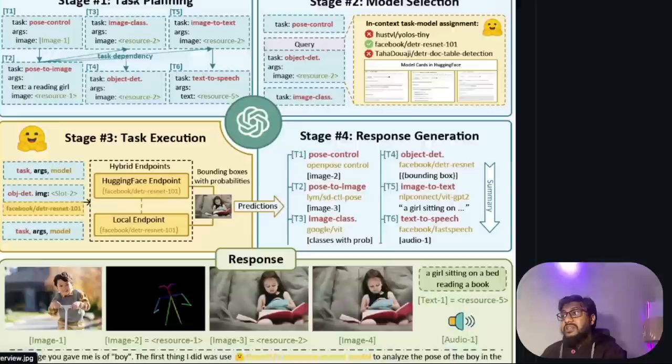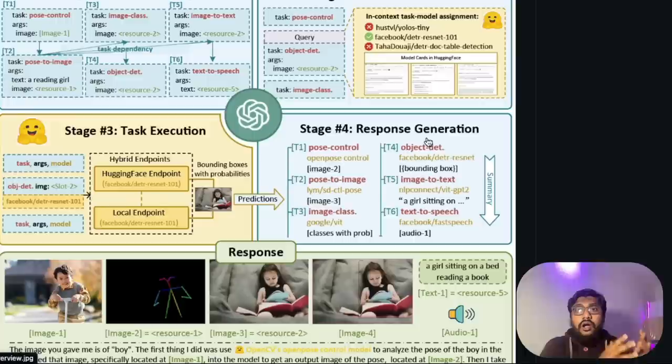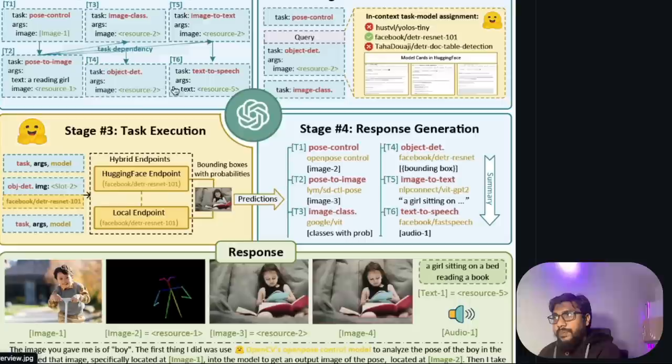This system has got four sections or four steps. The first step is task planning. The second step is model selection. The third step is task execution. And the fourth step is response generation. If you have been seeing all the recent videos that we have been covering in terms of autonomous AI, you would see a very similar pattern about how everybody is almost approaching this in a very similar architecture.